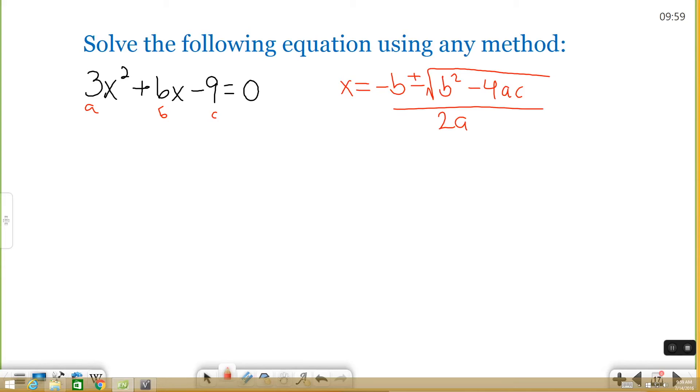Negative b is negative 6 plus or minus the square root of b squared. B again is 6 minus 4 times a times c. a is 3. c is negative 9. Make sure you take the sign that's in front of your numbers every time. All over 2 times 3.